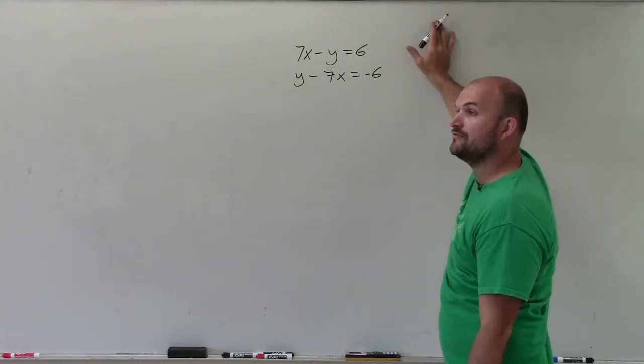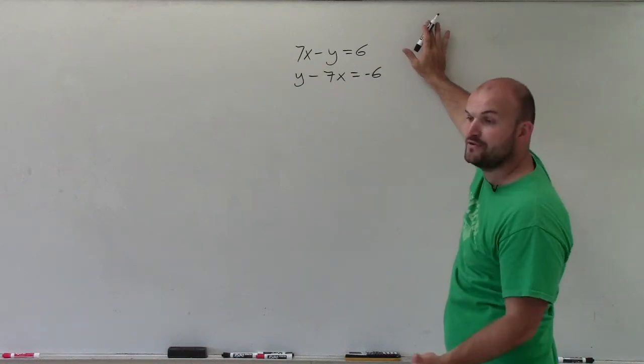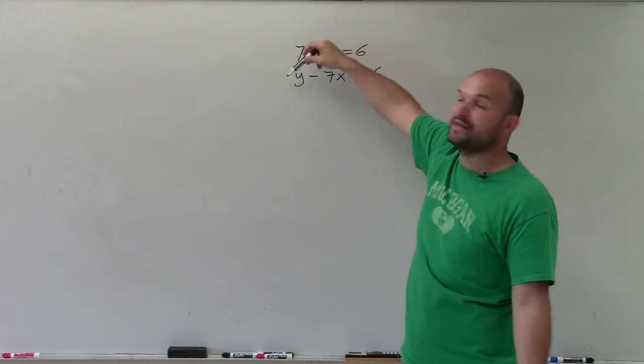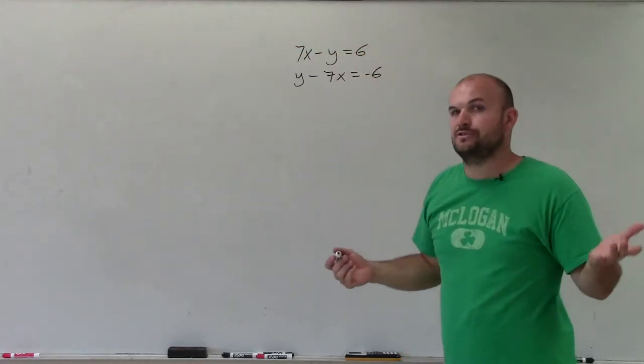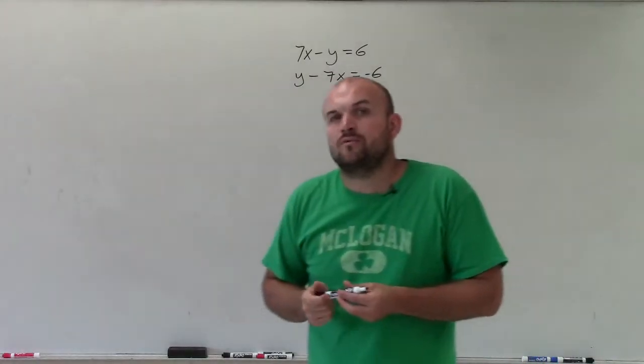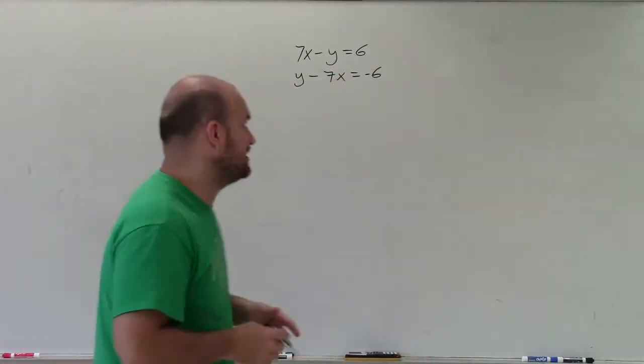The next thing is you want to say, alright, well, if there's not a variable that's isolated, look for the variable that has a coefficient of 1. Where you can see I have y and y. This is negative 1, that's positive 1, right? Well, preferably, we'd like to use the one that's positive. You could use this one, but since we have the variable with the positive one, let's go ahead and use that.